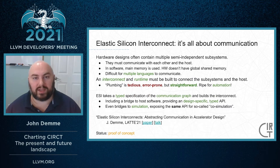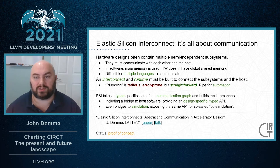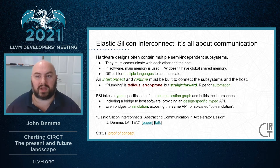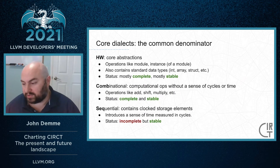ESI is a robot plumber. It takes a typed specification of the inputs and outputs for all the modules, as well as the desired communication graph, and then automatically builds an interconnect. Additionally, it will create a runtime bridge to software running on the host and expose a typed API customized to the modules which require host communication. Further, it is capable of building a runtime bridge between the host software and a simulation of the hardware, exposing the same typed API. For more details, I delivered a short talk about ESI at LATTE earlier this year.